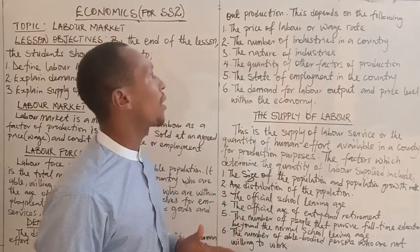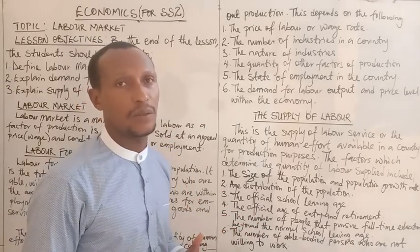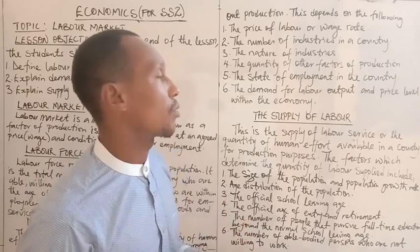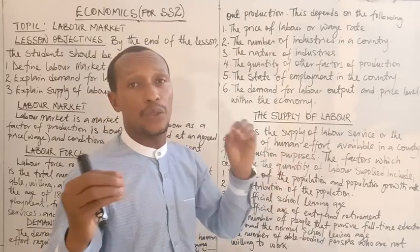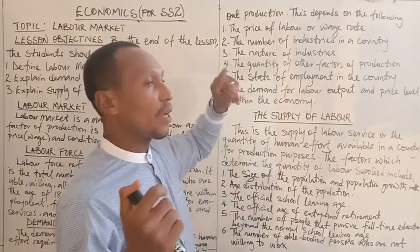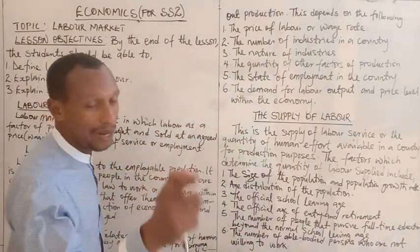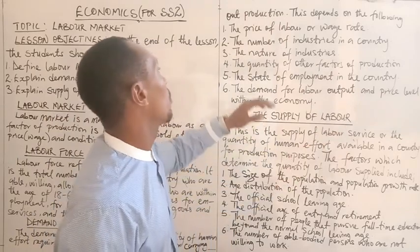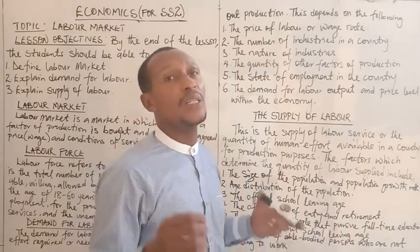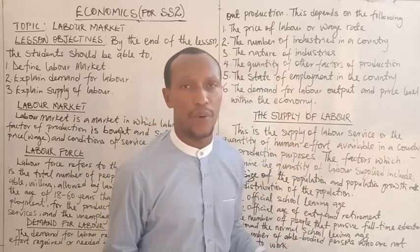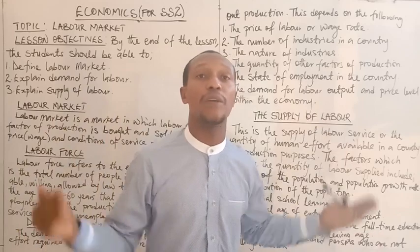Looking at these factors: the price of labor will determine the quantity that an entrepreneur will demand for production. If the price is high, the entrepreneur will demand low — the first law of demand also applies to labor demand. Regarding the number of industries: if there are few industries, the hands entrepreneurs need will be few. But if there are many industries, they will need more labor and the demand for labor will increase.